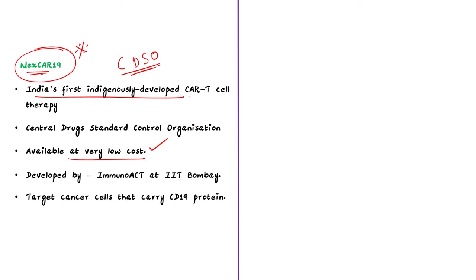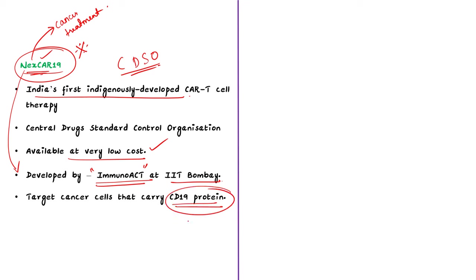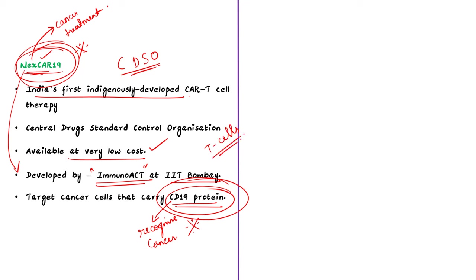In UPSC, there may be a question like: what do you mean by NexCAR19, which was recently seen in the news? The answer is that it is a technology related to the treatment of cancer. NexCAR19 is a type of CAR T-cell therapy developed by ImmunoACT, a company incubated at IIT Bombay. This particular T-cell therapy is designed to target cancer cells that carry the CD-19 protein. This protein acts like a flag on cancer cells, allowing CAR T-cells to recognize and attack them, starting the process of destroying cancer cells. Important key names to note are NexCAR19, CD-19 protein, CAR T-cell therapy, and T-cells — these are important facts for the prelims examination.